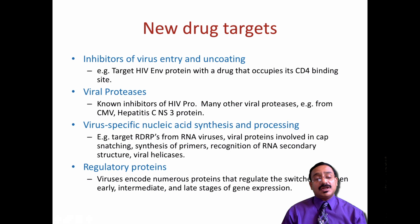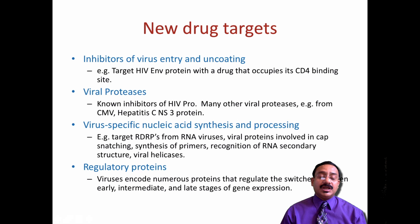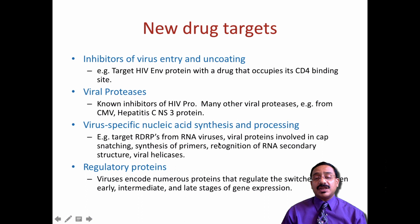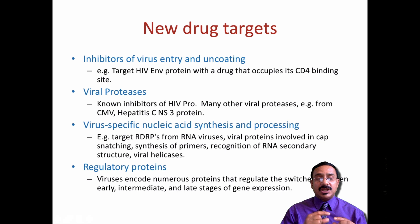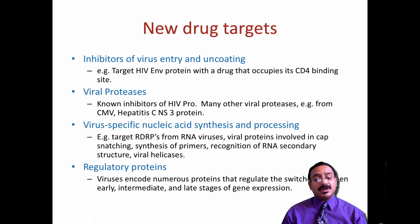The next classification is viral-specific nucleic acid synthesis and processing inhibitors — for example, targeting RNA-dependent RNA polymerases (RDRPs) from RNA viruses, and viral proteins involved in cap snatching in RNA synthesis. The formation of a cap is an important means by which the total transcript is transcribed. Synthesis of primers helps in elongation during replication and in secondary structure formation. Certain drugs also focus on regulatory proteins — viruses encode numerous proteins that regulate early, late, and intermediate stages of gene expression.